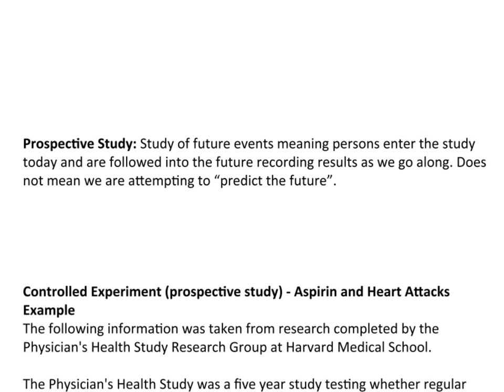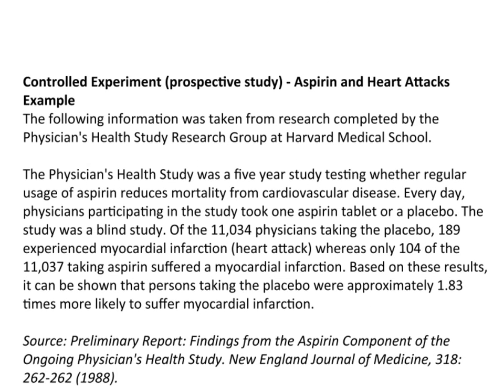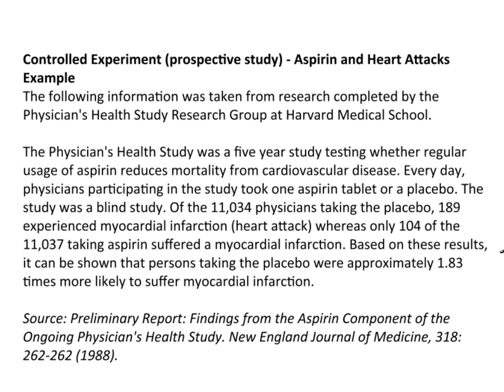A prospective study is a study of future events, meaning persons enter the study today and are followed into the future. Not everyone has to enter at the same time — subjects enter on certain dates and are followed forward, recording information as they go. A prospective study deals with future events, but we're not trying to predict the future; we're trying to figure out if a particular drug works better or not. Here's an example of a controlled experiment that was in fact a prospective study: the aspirin and heart attacks example.